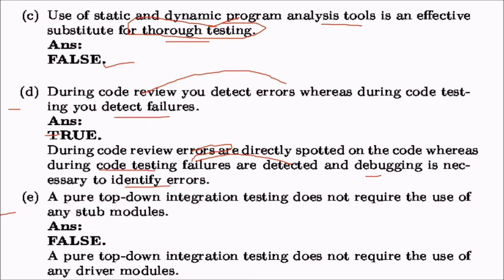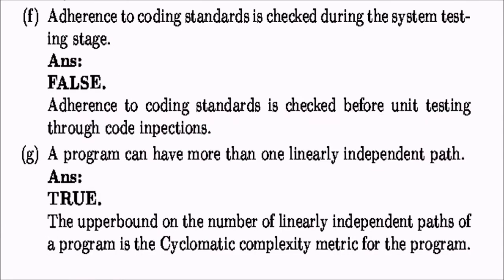Statement e: pure top-down integration testing does not require the use of any stub modules. This is false — even with top-down integration you still require stub modules. Statement f: adherence to coding standards such as MISRA C, MISRA C++, and JSF is checked before unit testing through code inspections, using static tools that check for coding standards without even running the program.